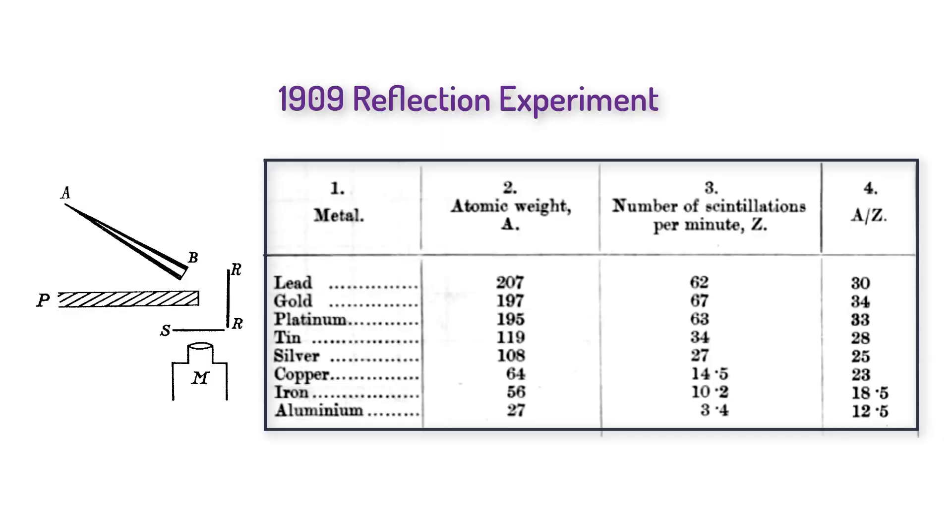In fact, it was done to verify Rutherford's theory about the nucleus that he had published two years earlier. The real influential experiment was done in 1909 and involved eight different metals, not just gold, but was far simpler.